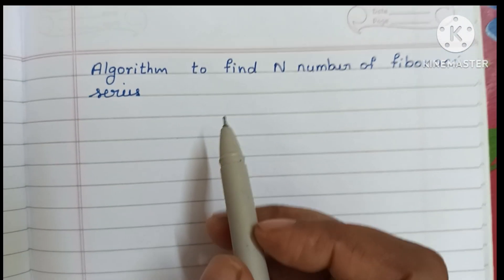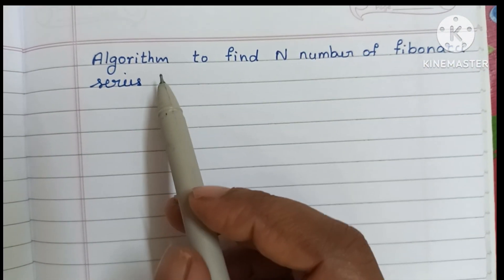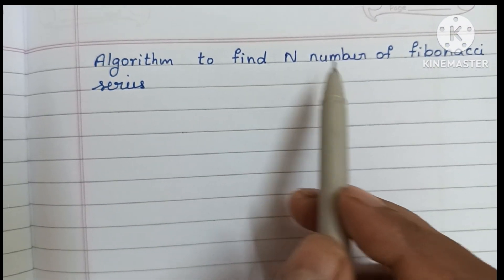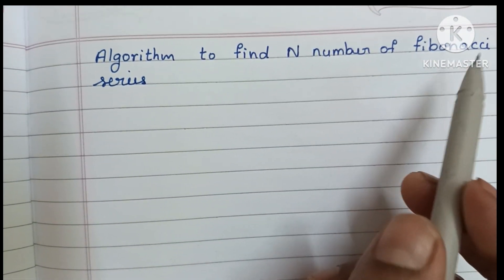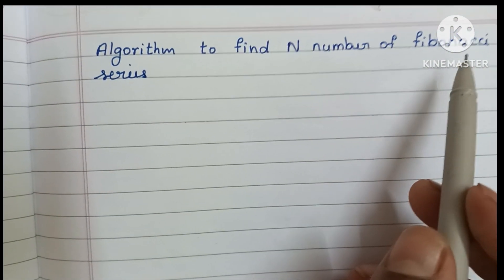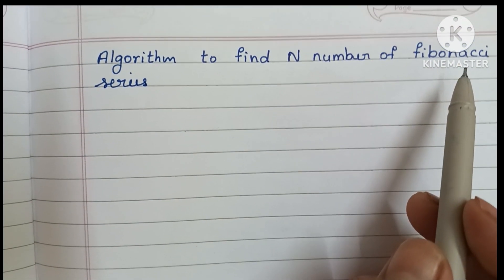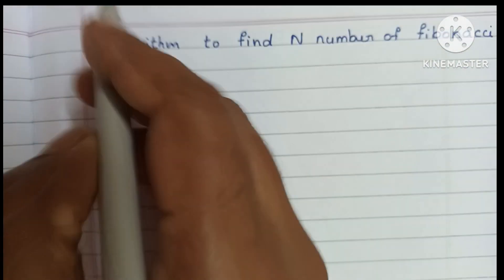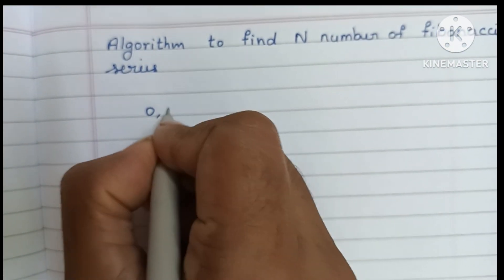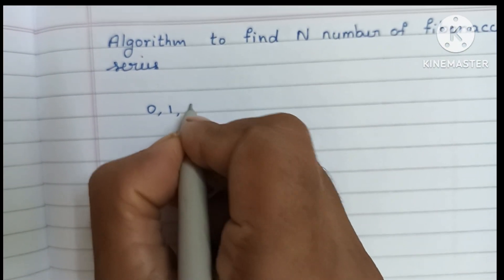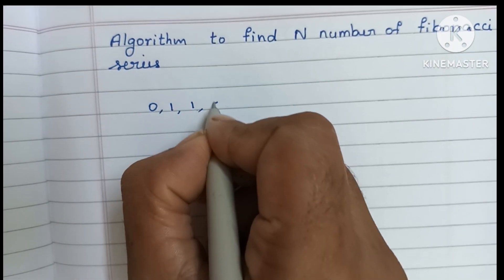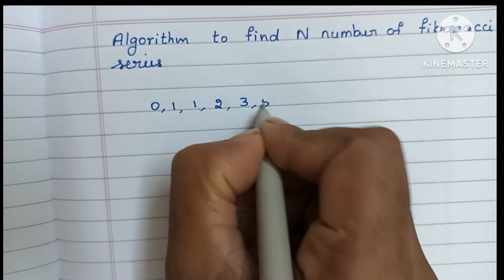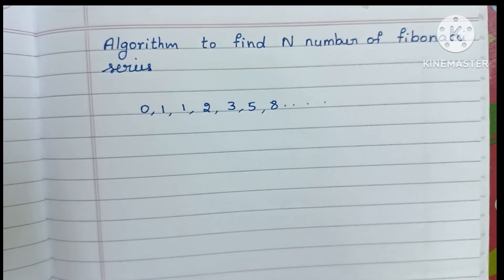Hi guys, in this video we're going to learn how to write an algorithm to find N number of Fibonacci series. Fibonacci is a number series: 0, 1, 1, 2, 3, 5, 8, and so on.